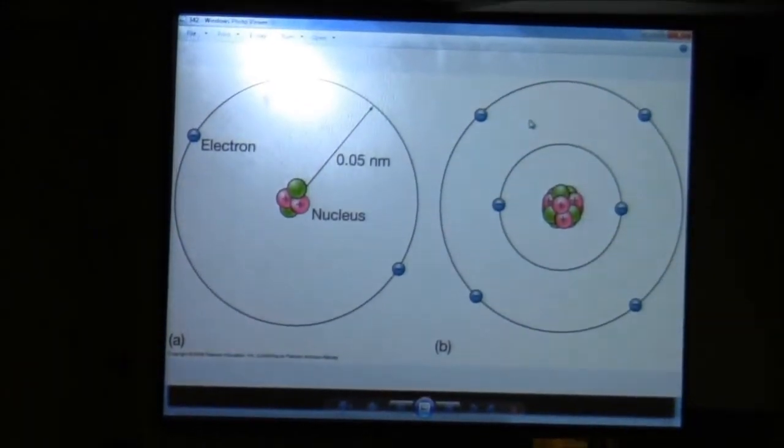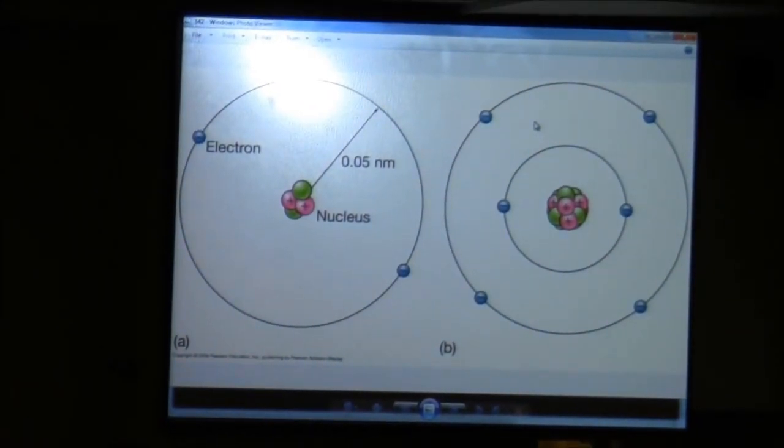So here we have helium and we have carbon. And again, nothing's to scale. You've got to keep that in mind. But in the helium, we have two protons. It's also got a couple of neutrons in there, but they don't really matter. It's all about the number of charges. Here at carbon, we've got six protons, so six charges.